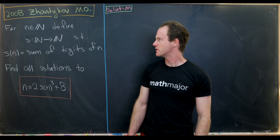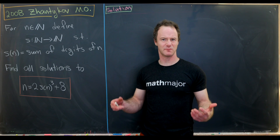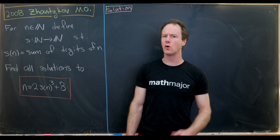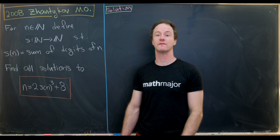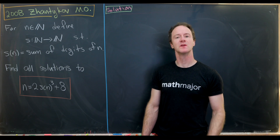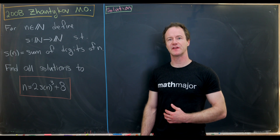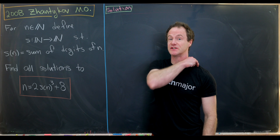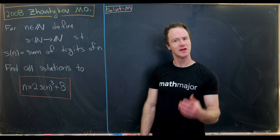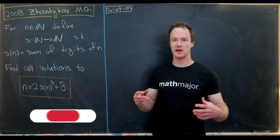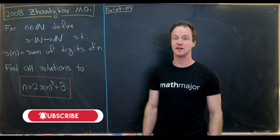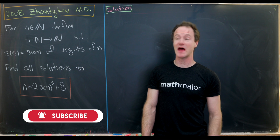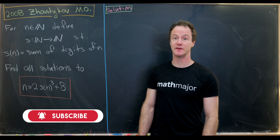Frequent viewers of the channel know that I like somewhat strangely defined functions. I've got a whole playlist on the floor function, for instance. Another function that I like quite a bit is the sum of digits function, which takes in a natural number and outputs the sum of its digits. And this problem has something to do with that function.